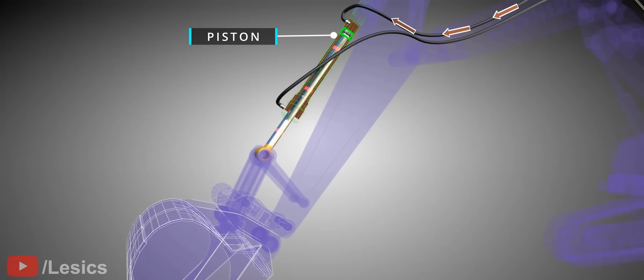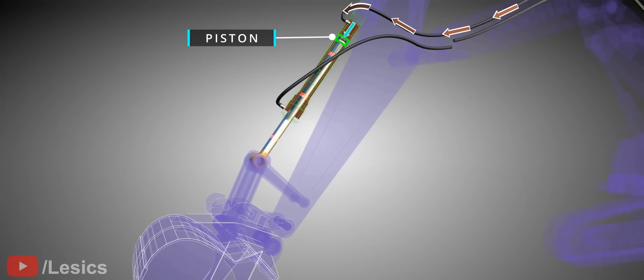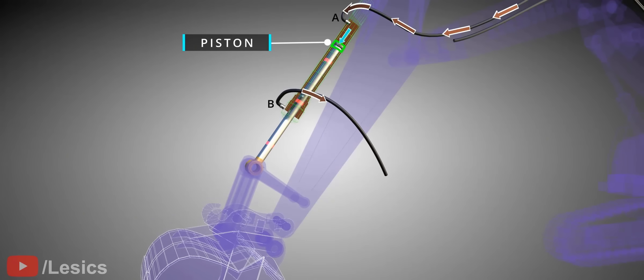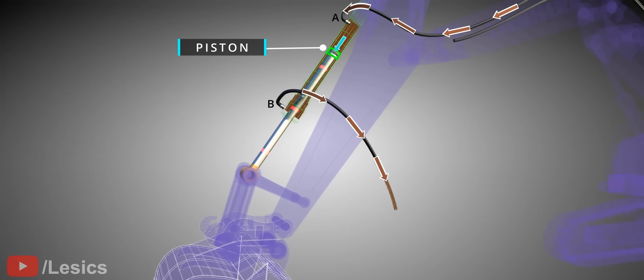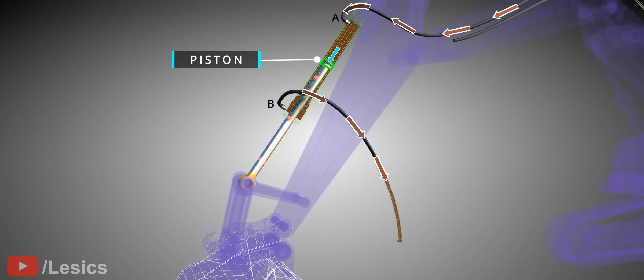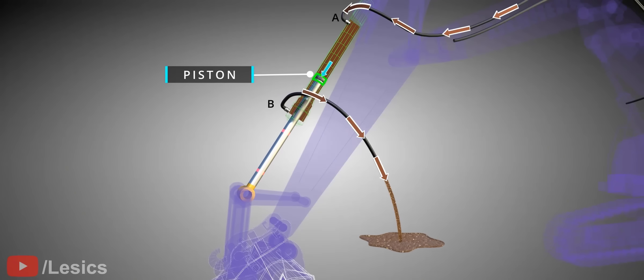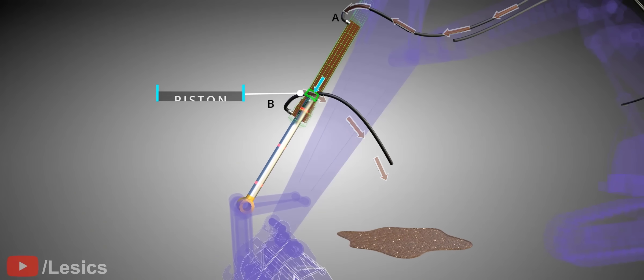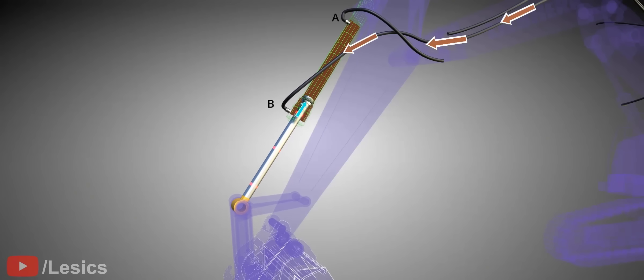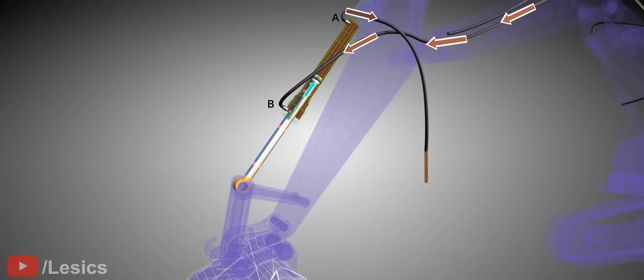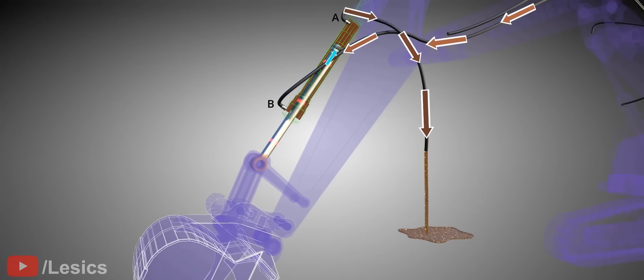By passing pressurized oil in the direction as shown here, the piston achieves the expansion movement. The oil on the other side of the piston gets expelled through pipe B as it is incompressible. Now, if you want to move the piston backward, the pressurized oil should enter through the pipe B. This causes oil on the other side to get expelled from pipe A.